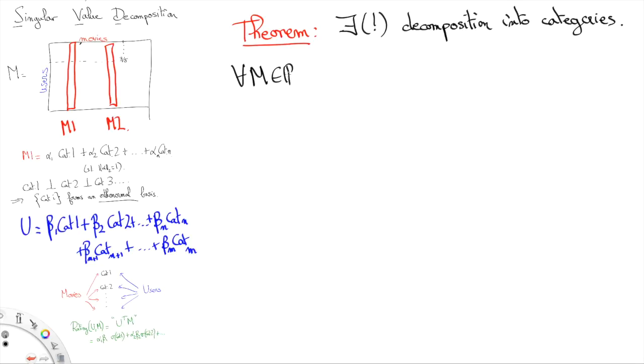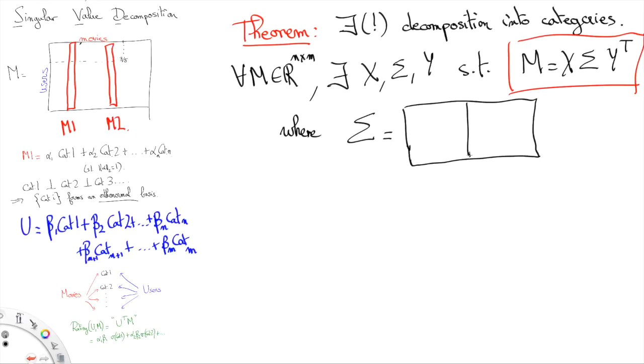More precisely, any rectangular matrix M can be factorized as a product X, Sigma, Y transposed, where Sigma is a non-negative diagonal square matrix attached to a rectangular zero matrix, and where the rows of the matrices X and Y